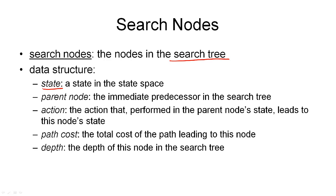Note that two search nodes may contain the same state. The next component of a search node is the parent node stored in each node — that is the immediate predecessor in the search tree, the parent in the tree. The only node that doesn't have a parent is the root node. Then we have to store an action in a search node — that is the action that gets us from the parent node's state to this state.